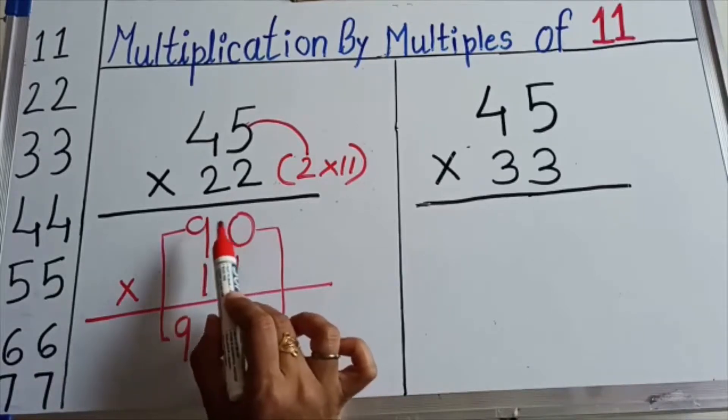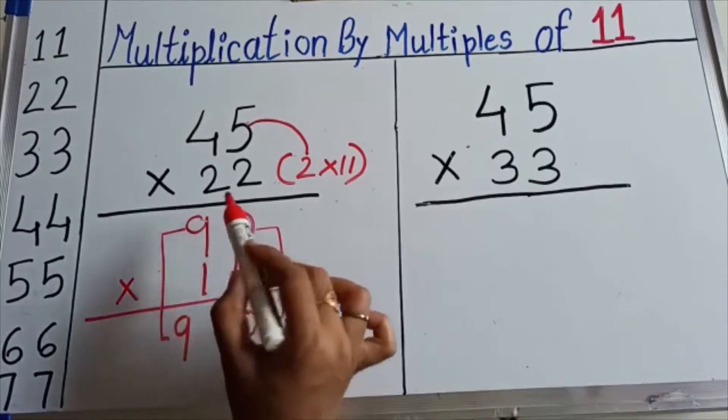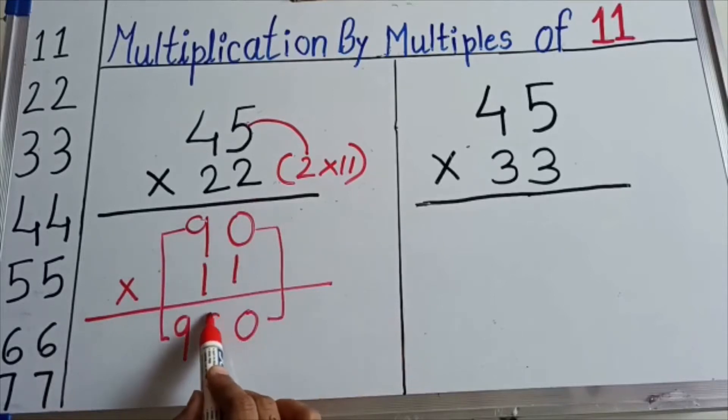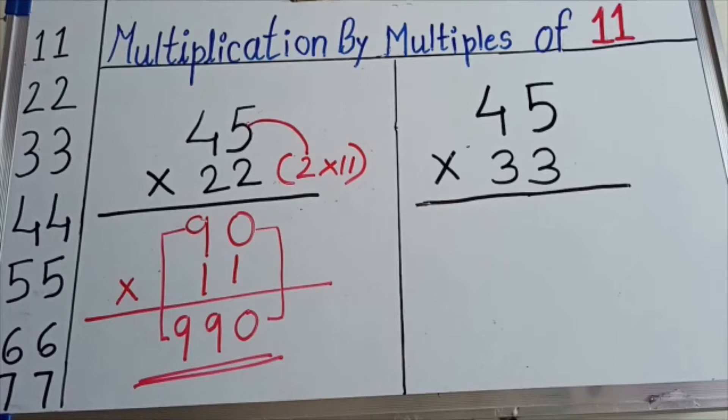Now we will do the addition of these 2 numbers. 9 plus 0 gives you 9 and this is my final answer.